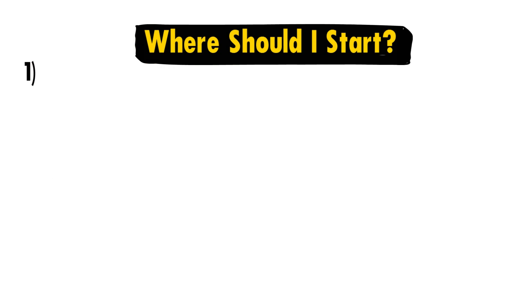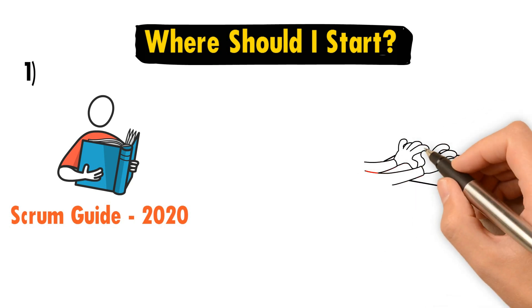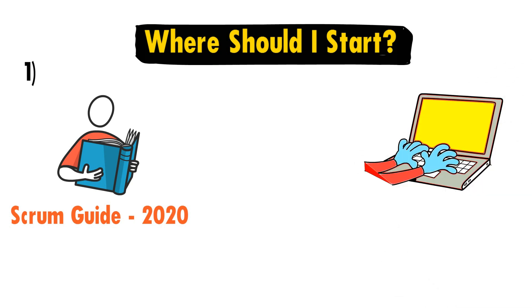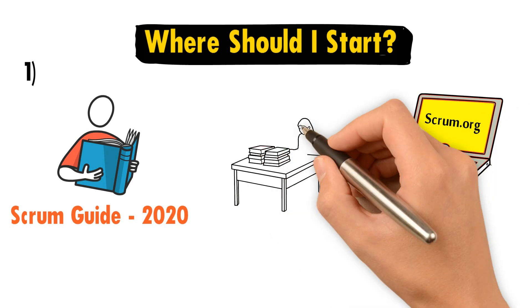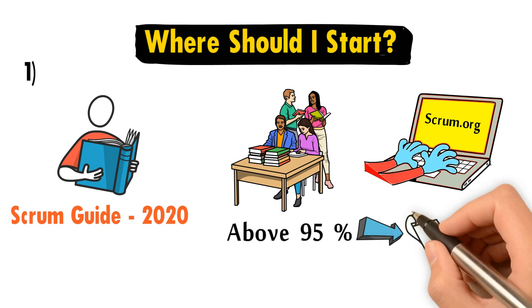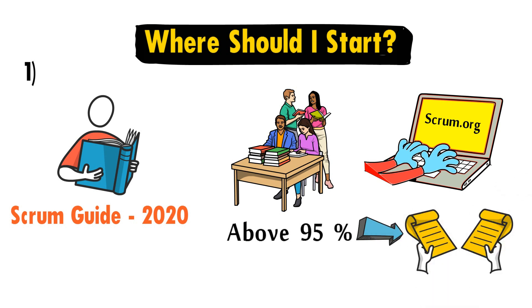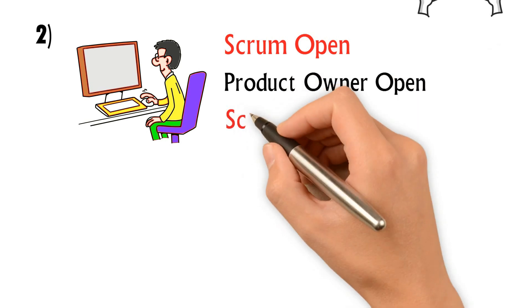If you have read the Scrum Guide version 2020 multiple times and practice all three open assessments listed below in Scrum.org with high scores greater than 95%, you should be ready to take two mock exams in this course. Three open assessments include Scrum Open, Product Owner Open, and Scrum Developer Open.